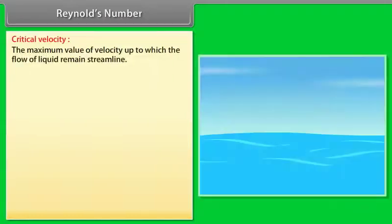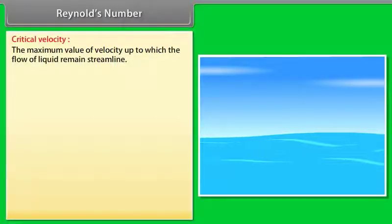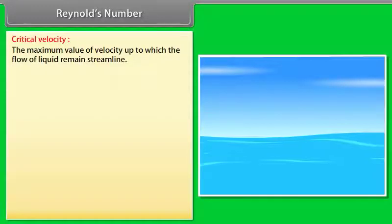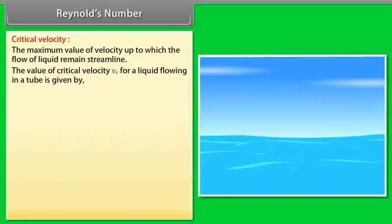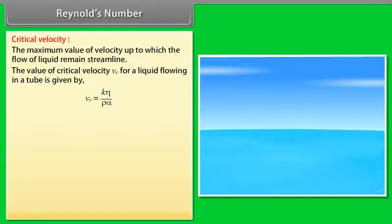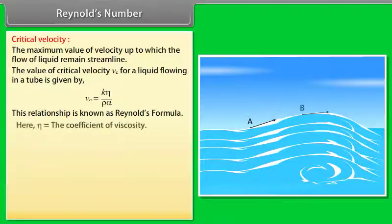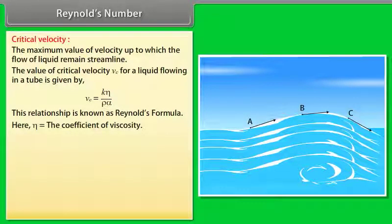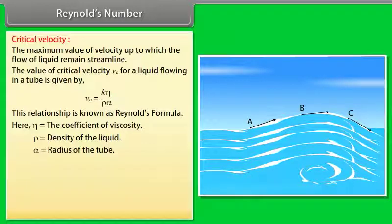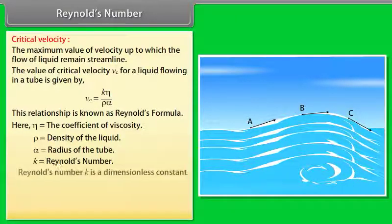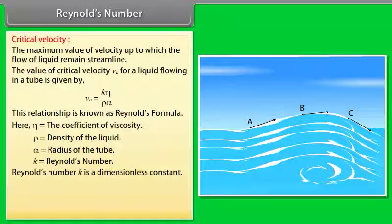Reynolds number. Critical velocity is the maximum value of velocity up to which the flow of liquid remains streamlined. The value of critical velocity Vc for a liquid flowing in a tube equals Kη/(ρα). This relationship is known as Reynolds formula. Here η is the coefficient of viscosity, ρ is the density of the liquid, α is the radius of the tube, K is Reynolds number. Reynolds number K is a dimensionless constant.